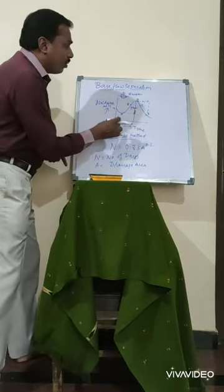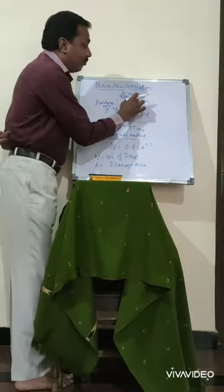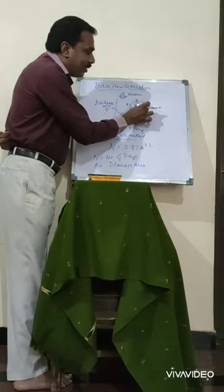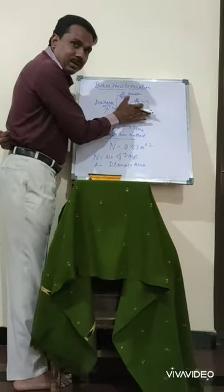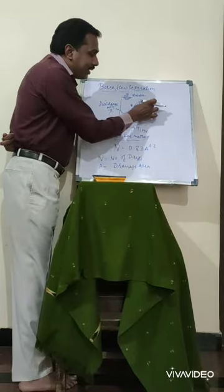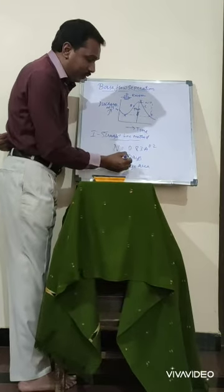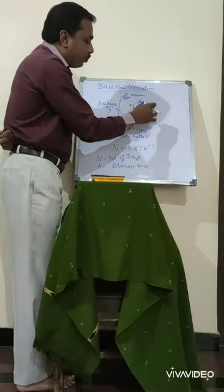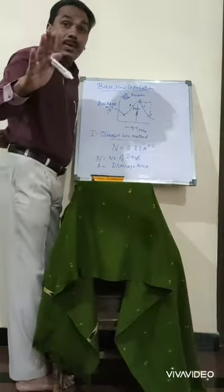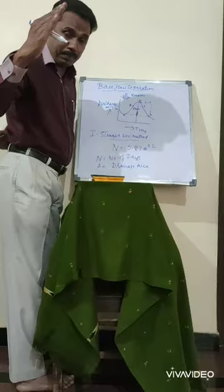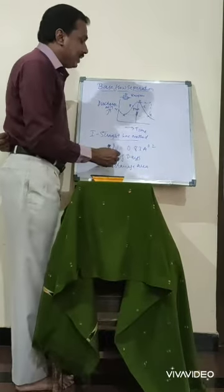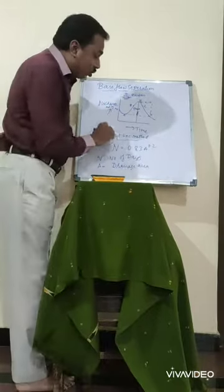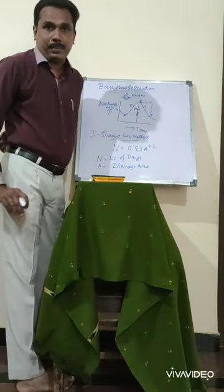N is the number of days — when the intensity of the peak takes place, automatically there would be a deflection. To flatten this base, we take N. The drainage area is the area which is covered in this particular region. This method is called as the first method, and it is also called as the straight line method.